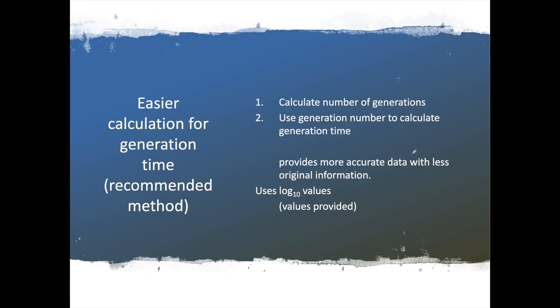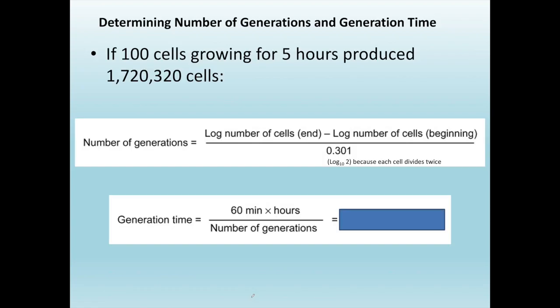For easier calculation, the first thing we have to do is calculate the number of generations, and we're going to use that generation number to then calculate the generation time. This gives us much more accurate data, less original information. It also uses log base 10 values, which are really easy to use. Those values are going to be provided to you. You will not be required to calculate a log value. You'll be given a table with all the numbers and their log base 10 values.